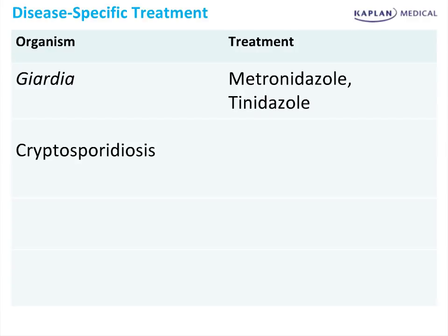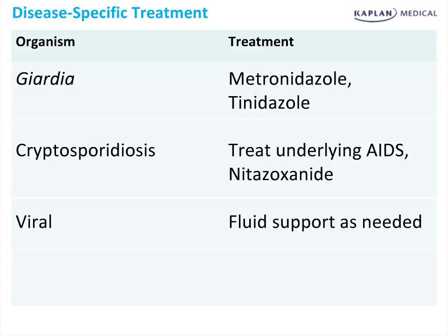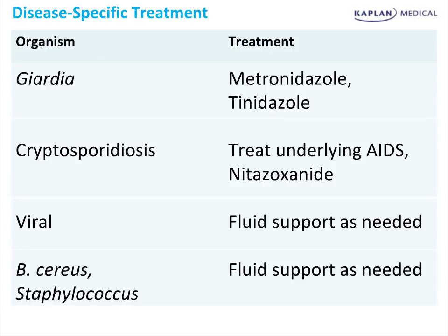For Cryptosporidiosis, that's why you need to know about the acid-fast stain. Nitazoxanide is a specific therapy for Cryptosporidiosis; you treat the underlying AIDS along with nitazoxanide. For decades we never had a drug for Cryptosporidiosis — now we do. There is no specific therapy for viral diarrhea, Staphylococcus, or Bacillus cereus — just fluid support. Nitazoxanide is how you get that extra point on your exam.